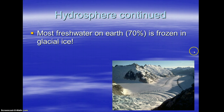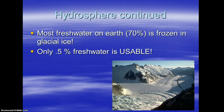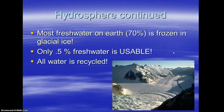Let's talk numbers. Most of the fresh water — 97% of the water on our planet is salty. That means 3% is fresh water. Of that 3%, 70% of it is frozen in glacial ice. Only half a percent of fresh water is actually usable for us because the rest is trapped — in groundwater, in bodies, in the atmosphere as vapor, certainly locked as glaciers. But thankfully, all water is recycled, and in some areas of our planet it's recycled faster than others.